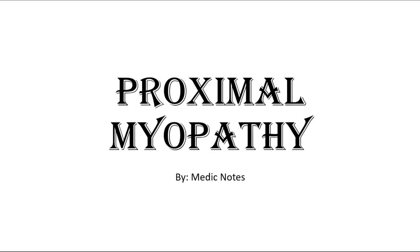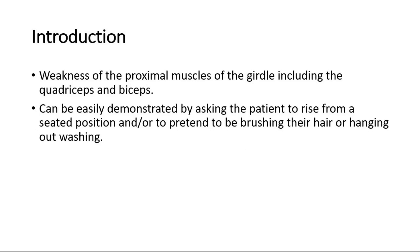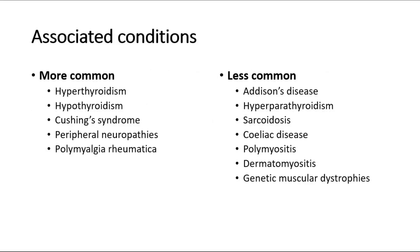Welcome back to another video of Medic Notes. This video is on proximal myopathy. Proximal myopathy is the weakness of the proximal muscles of the girdle, including the quadriceps and biceps. It can be easily demonstrated by asking the patient to rise from a seated position, or to pretend to be brushing their hair or hanging out washing to test for proximal myopathy of the upper limbs.